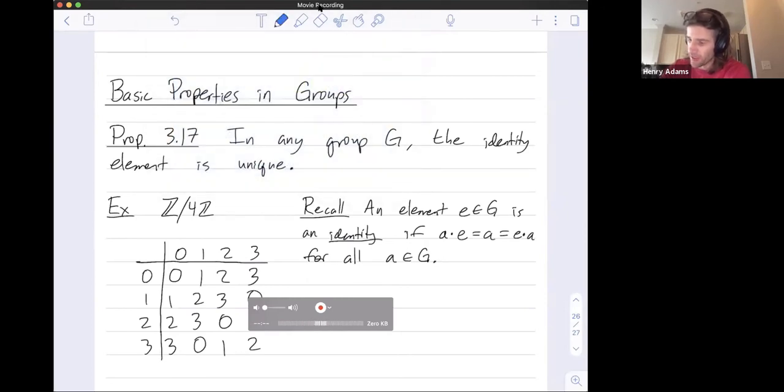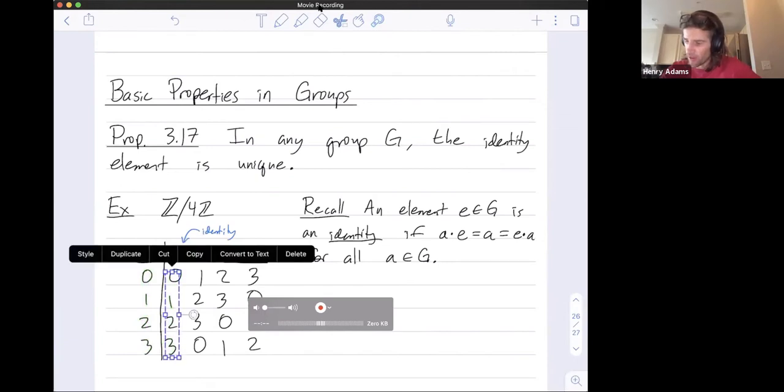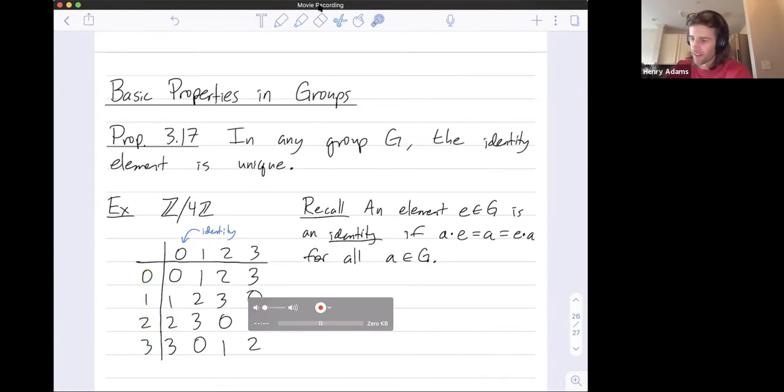So who is the identity in this particular group? It's 0. And you can see that because when I combine 0 with each of these elements 0, 1, 2, and 3, I just get the same elements back: 0, 1, 2, and 3. Same in the opposite direction.